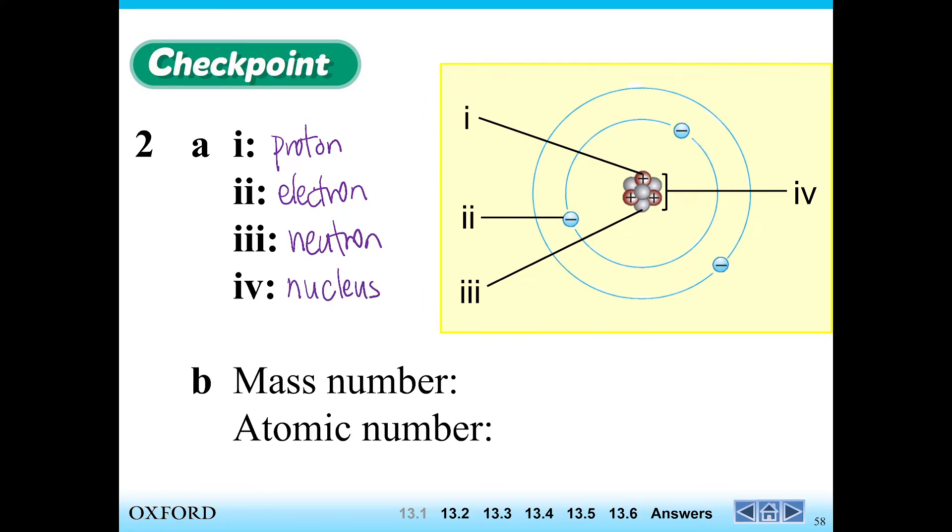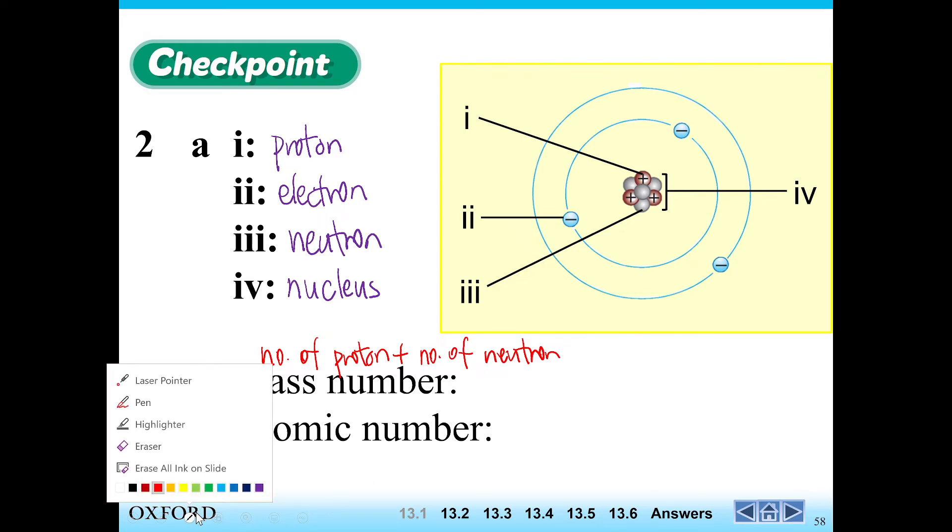And then they're asking the mass number and atomic number. Now the mass number, if you still recall, is the number of protons plus the number of neutrons. Or it could be number of electrons plus the number of neutrons for an atom of an element.